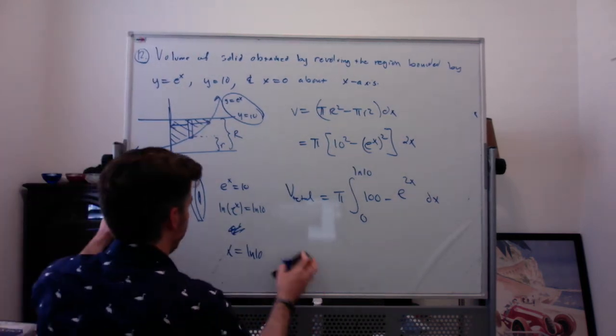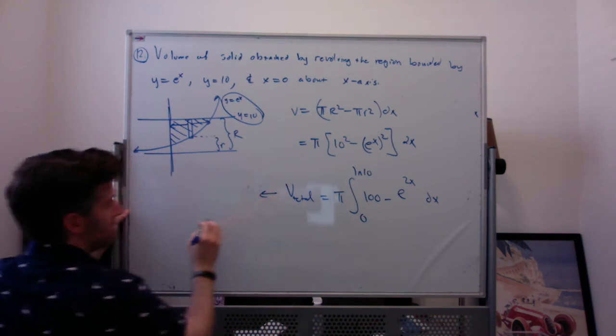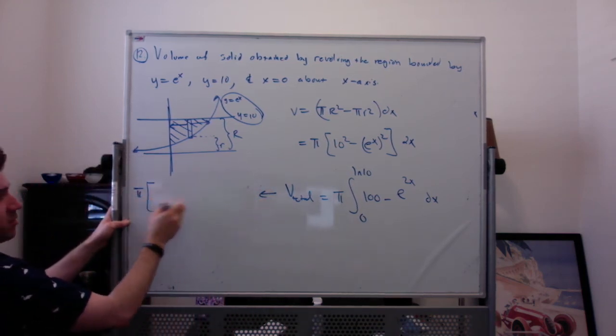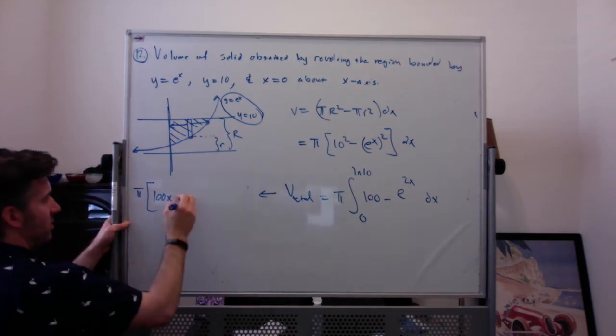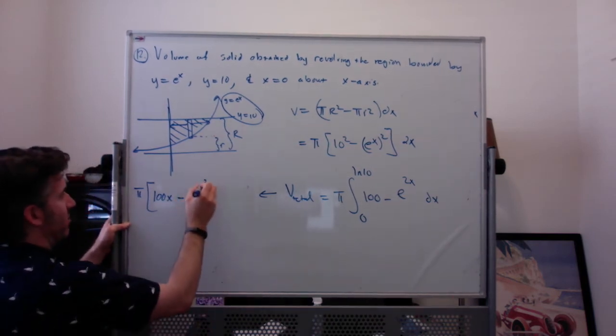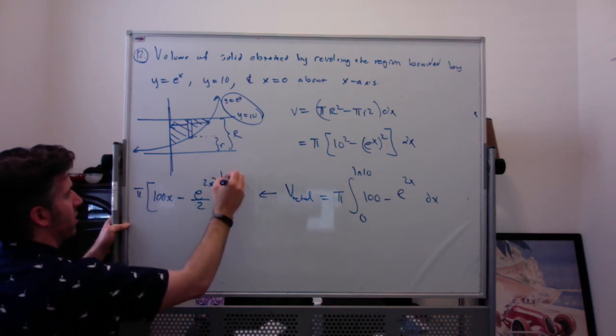Okay, so now we're just going to find this. So we end up getting pi times—the integral of 100 is 100x, and a mini u-substitution tells us that the integral of e to the 2x is e to the 2x divided by 2, from 0 to the natural log of 10.